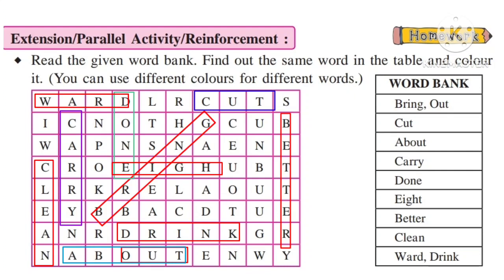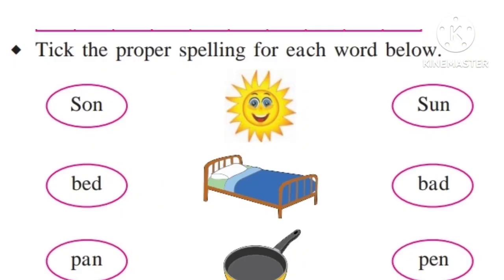Tick the proper spelling for each word below. That's it. Choose the correct spelling - first sun, then bed, then pan, pen.